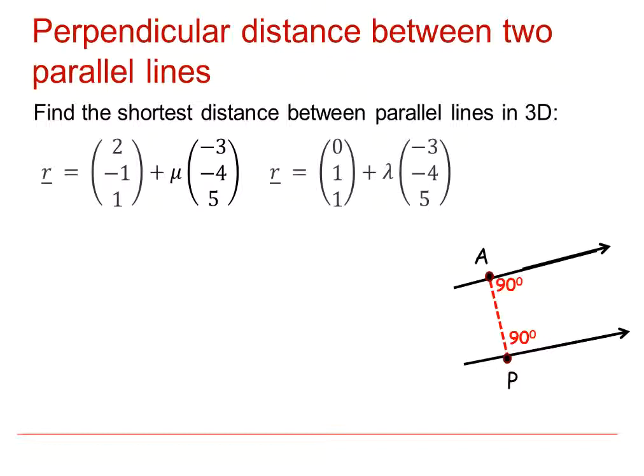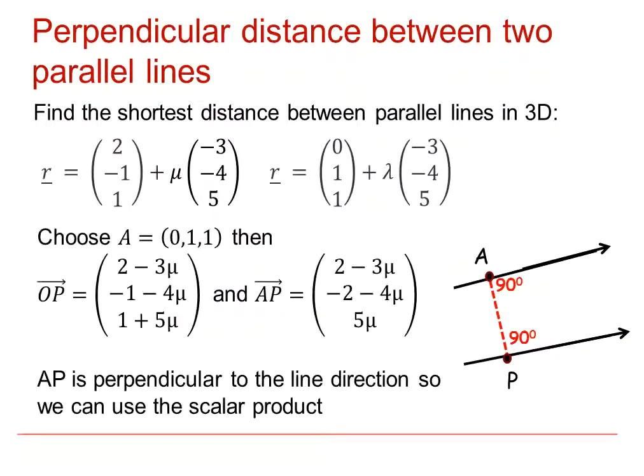If we choose a known point on one of the lines, in this case we've taken the second line and set lambda equal to zero, so we've chosen the point A as (0,1,1).